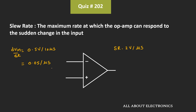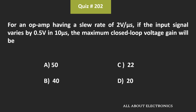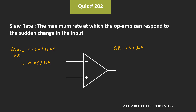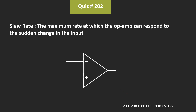So this is the rate at which the input signal is changing, and we have been asked to find the maximum closed-loop voltage gain. In the closed-loop condition, the output voltage is equal to the closed-loop gain multiplied by the input voltage. So the rate of change of output voltage equals the closed-loop gain multiplied by dVin/dt. This term is nothing but the slew rate, so: Slew Rate = Closed-loop gain × (dVin/dt).